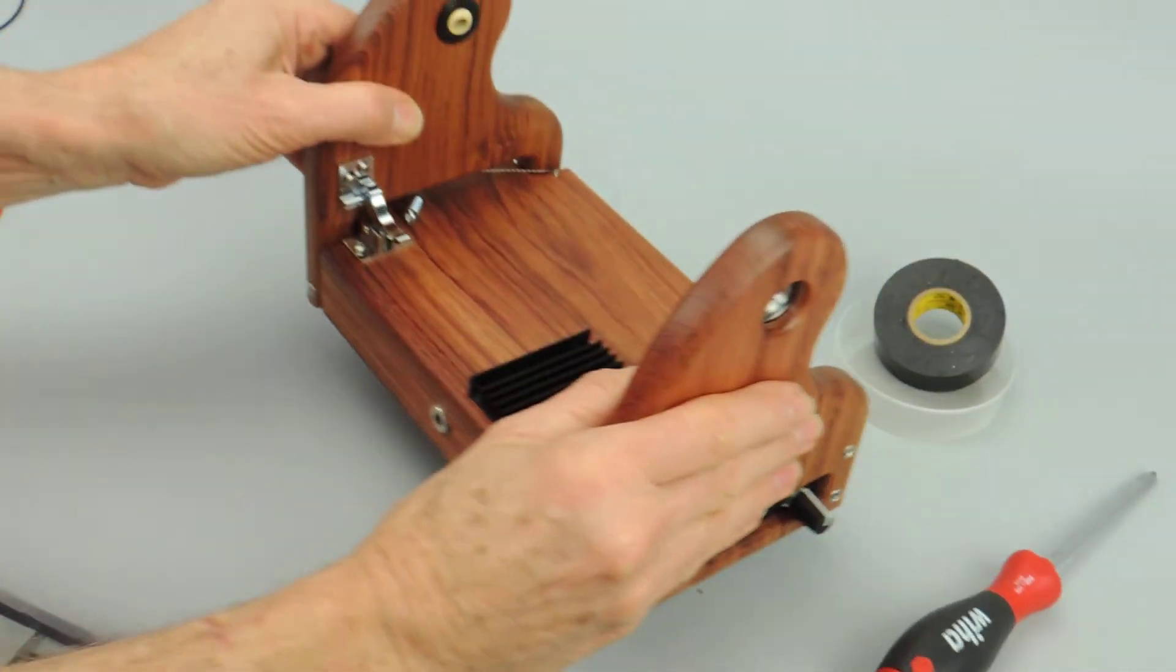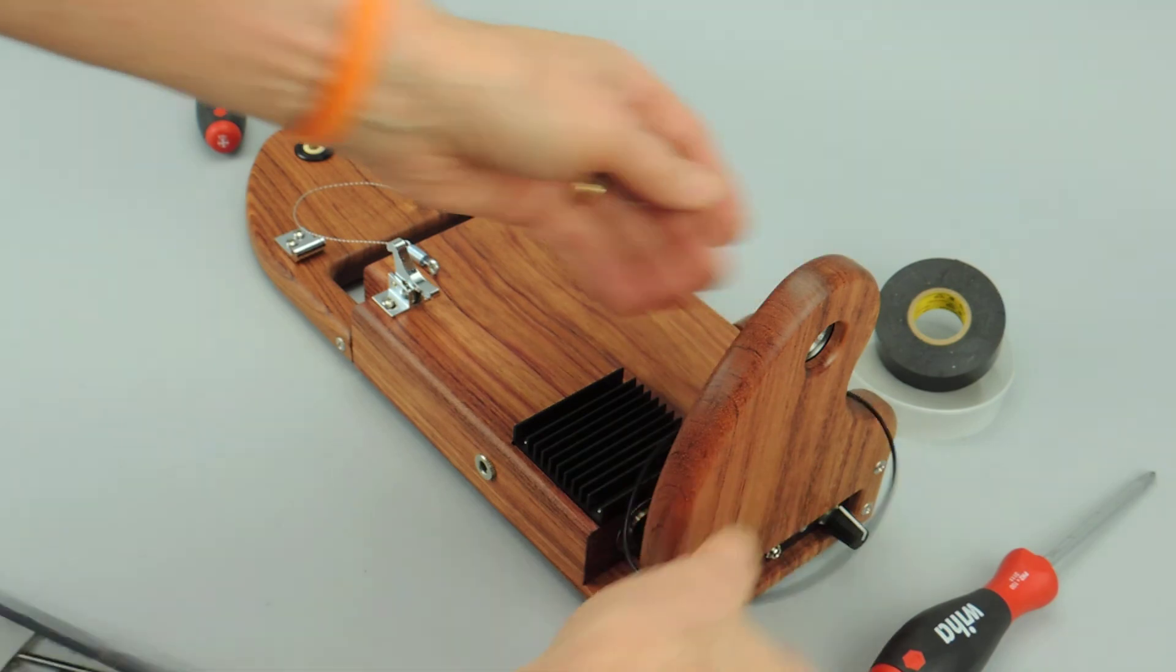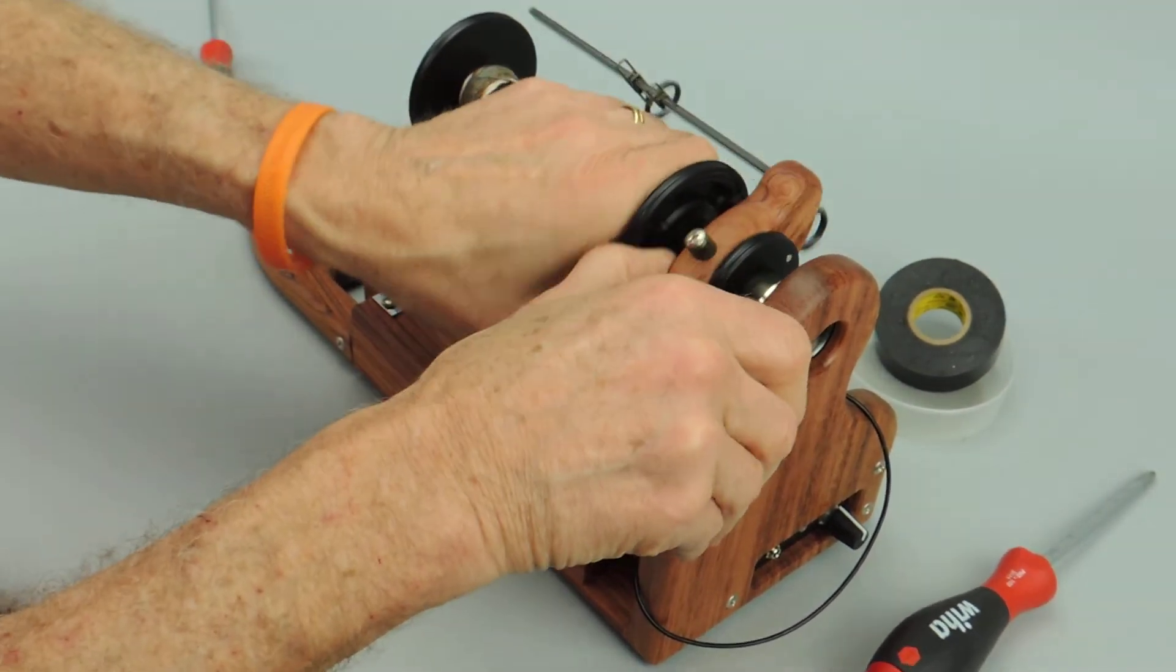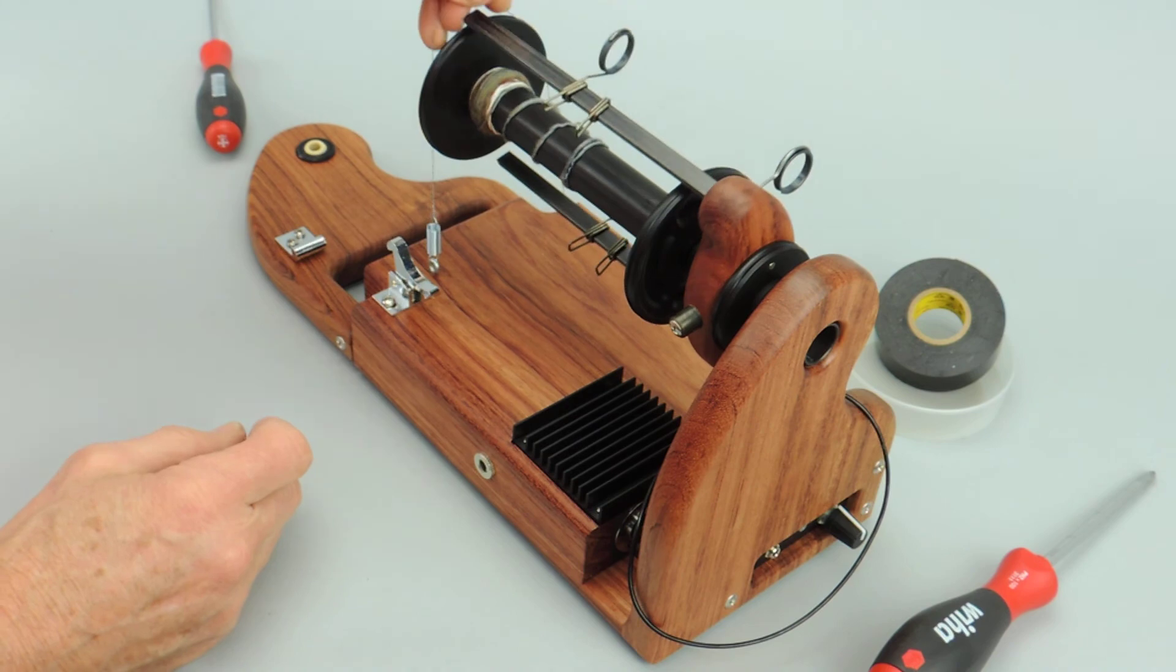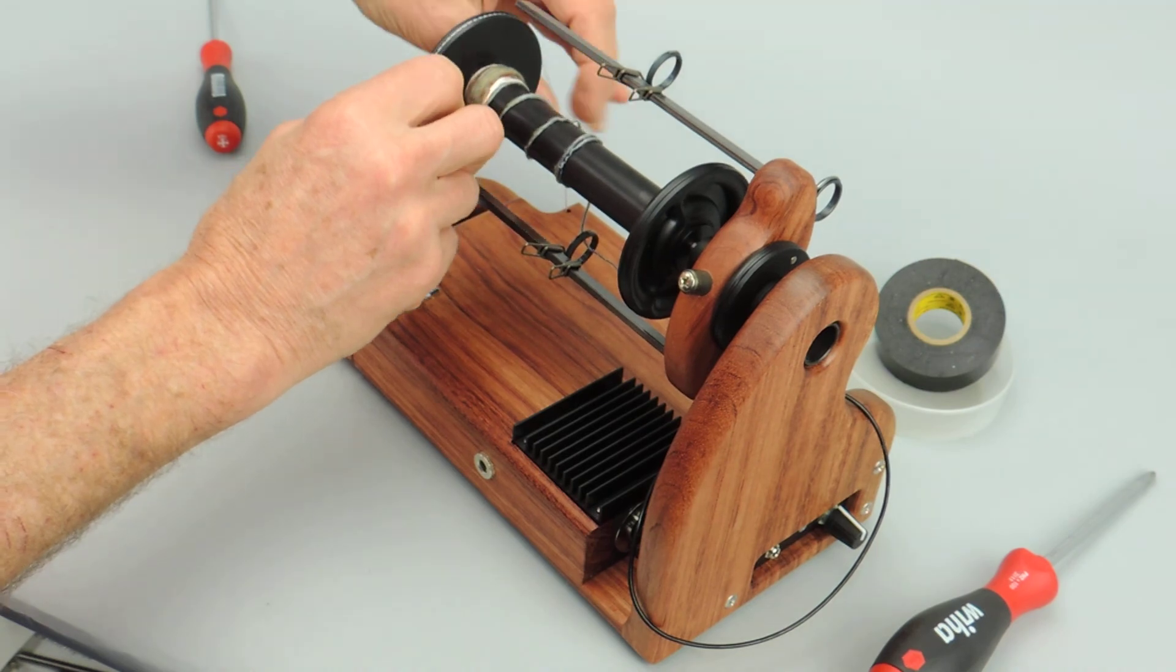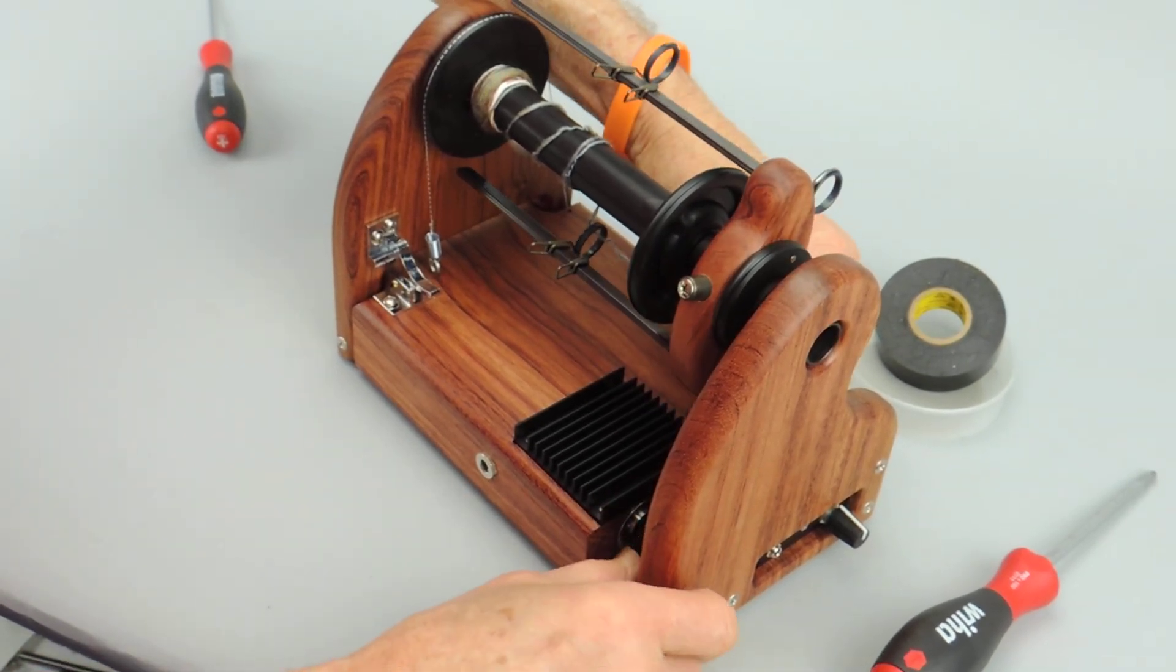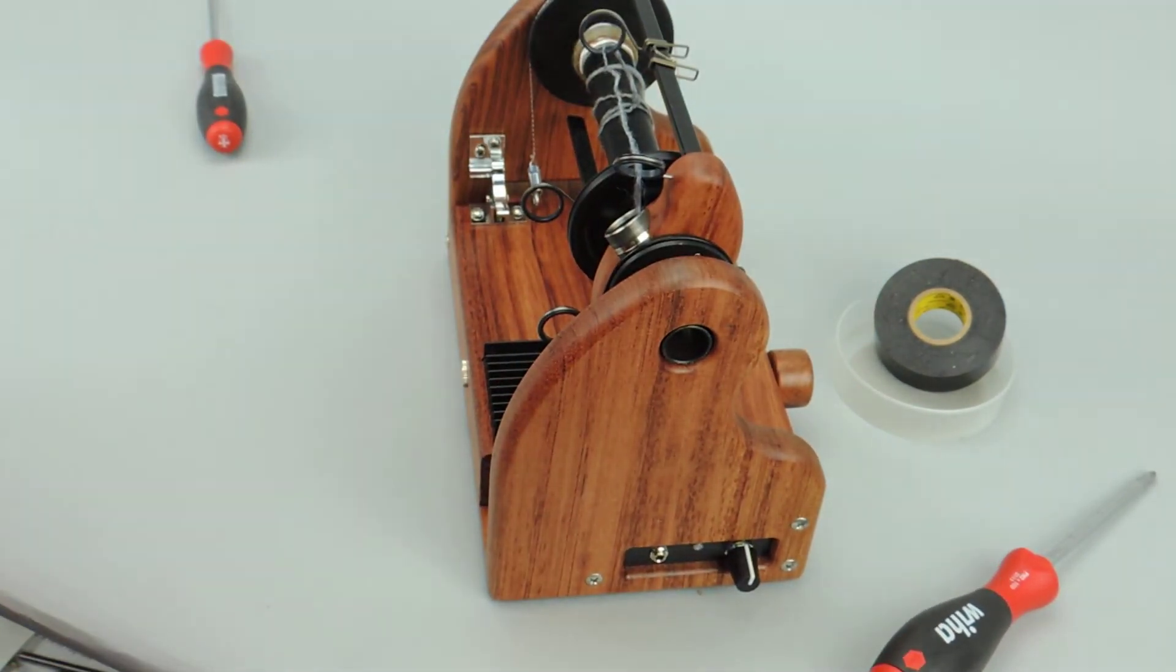That's all there is to it. All that's left is to put the flyer back into place. So I put on the drive band - I usually put it on the motor first, then on the flyer - and we're done. That's all there is to it.